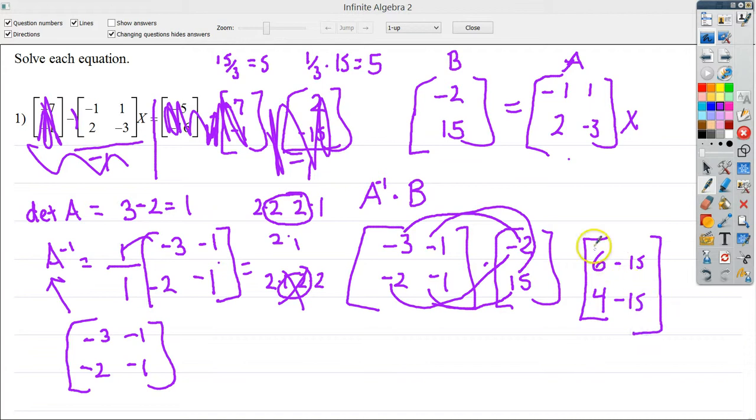So for my final answer, I just do 6 minus 15 and get negative 9. And then 4 minus 15, which gives me negative 11.